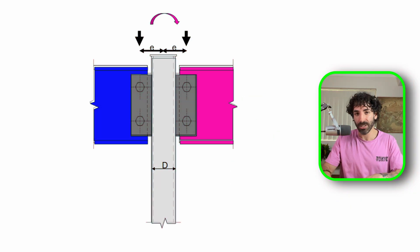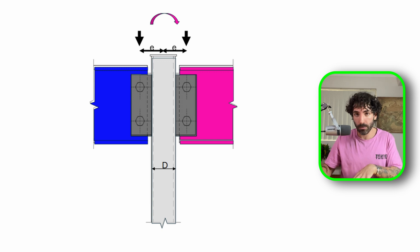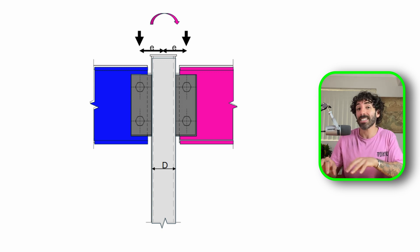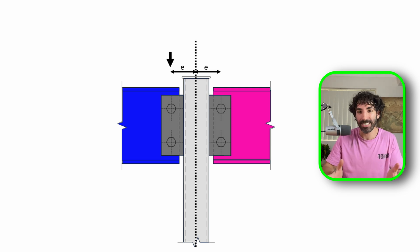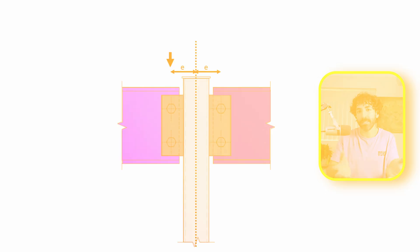Even though we have pin connections — meaning no bending moment is transferred to the columns — we still need to account for bending due to eccentricity of connections. The load doesn't act perfectly in line with the column's center; it's slightly offset. This small shift creates a bending moment that we need to factor into our design.